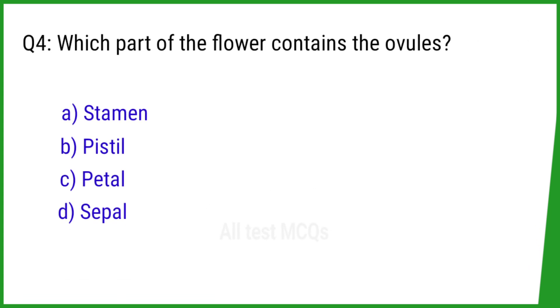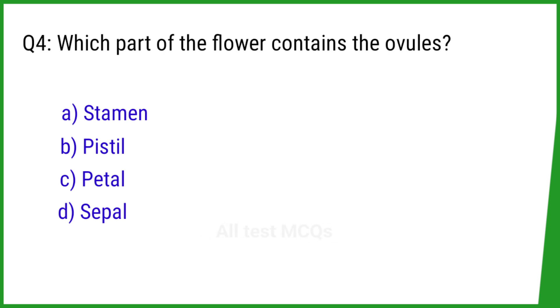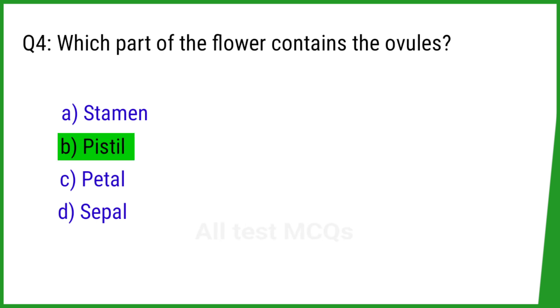Question number 4. Which part of the flower contains the ovules? The right answer is option B: Pistil.